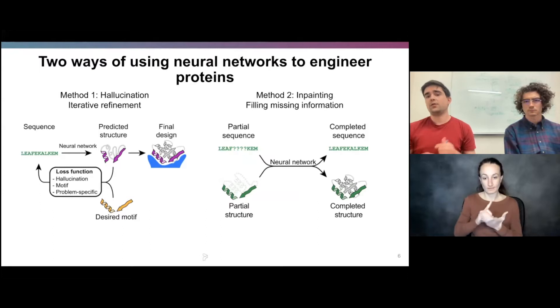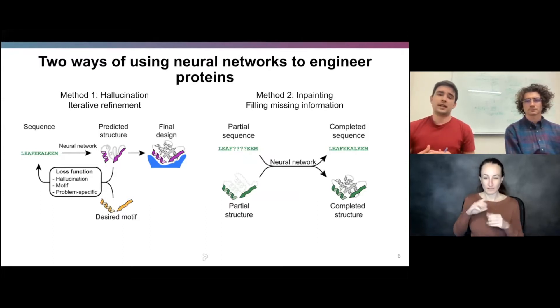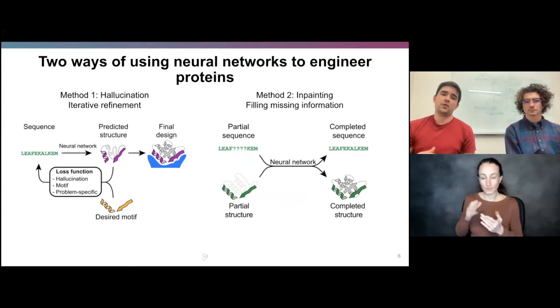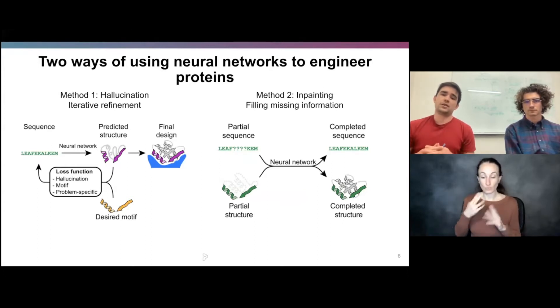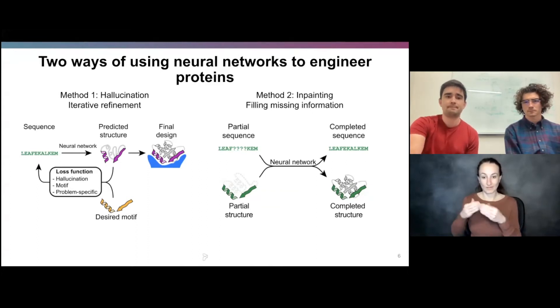The second approach, which we call inpainting, is more of a filling-in-missing-information task that David will talk about, where we retrain one of these networks to jointly predict sequence and structure given only partial information in the beginning.